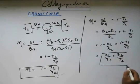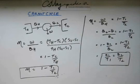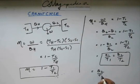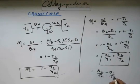When Clausius saw this, something struck in his brain, and that gave birth to the term entropy and the expression of entropy. From Q1 by T1 equals Q2 by T2, we get Q2 by T2 minus Q1 by T1 equals zero.